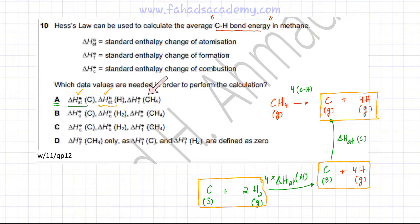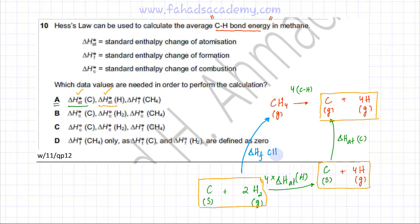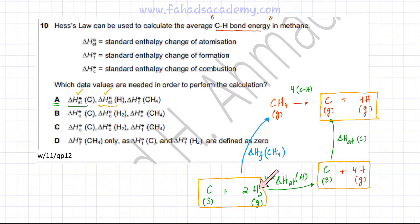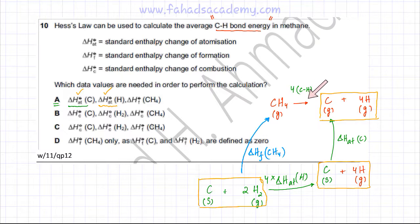We are now left with the enthalpy of formation of CH₄. Looking at the remaining reaction — one mole of CH₄ being formed from carbon solid and hydrogen molecules in their standard states — this is exactly equal to the enthalpy of formation of CH₄. So we have successfully created a complete second route in the Hess cycle.